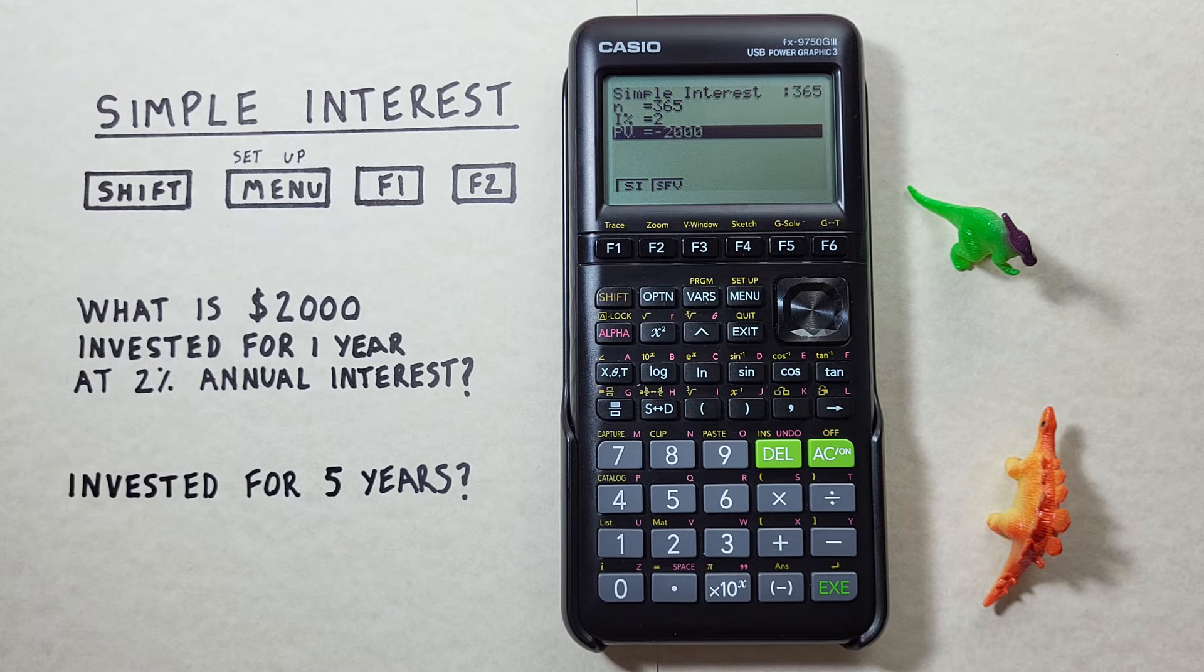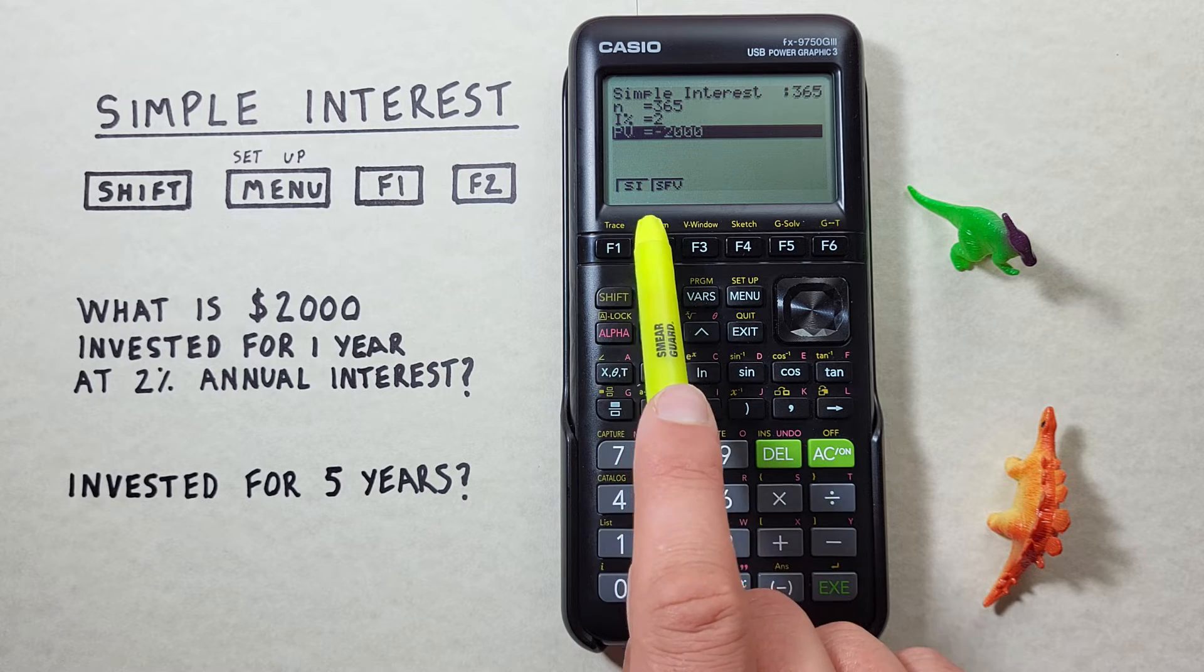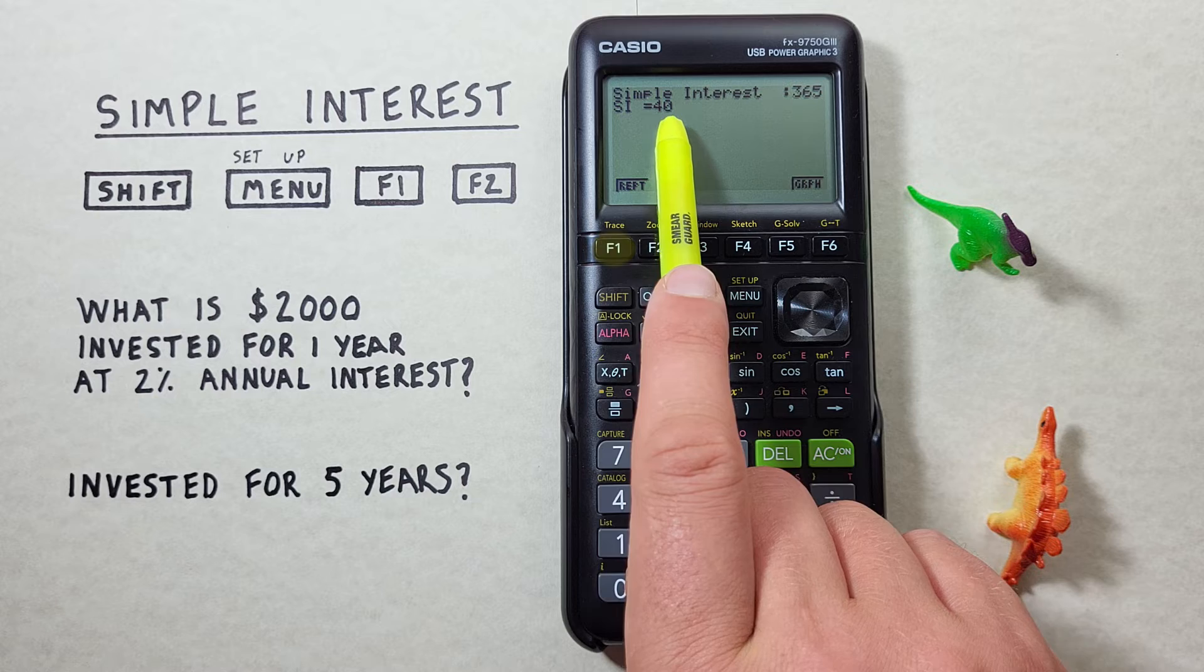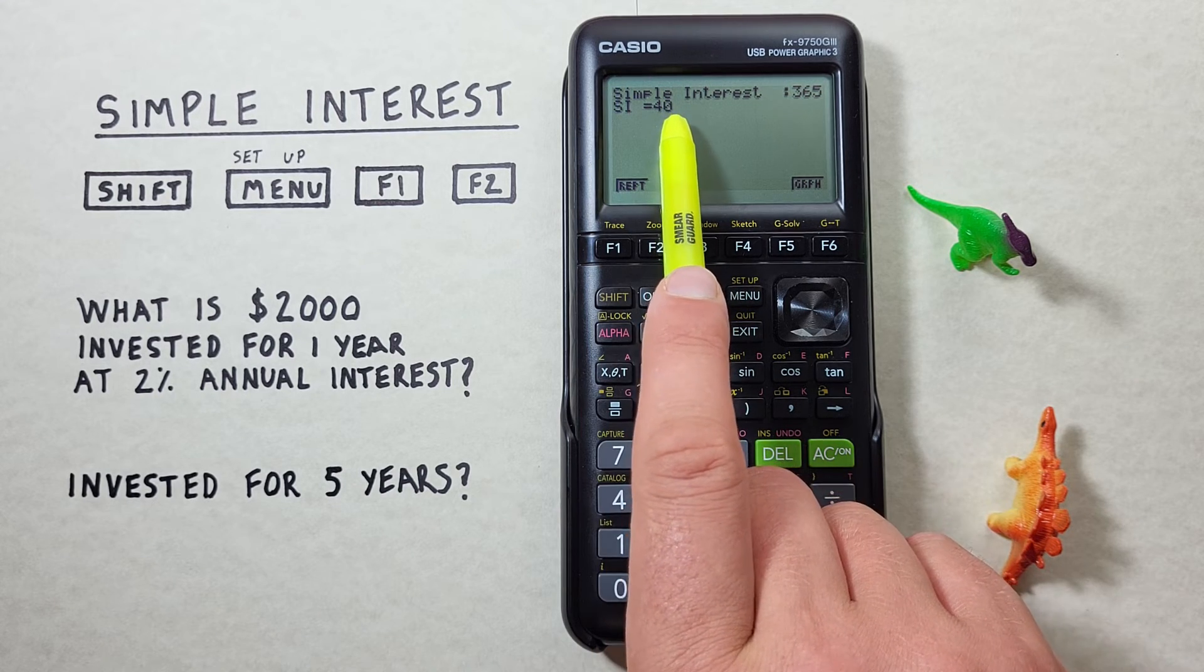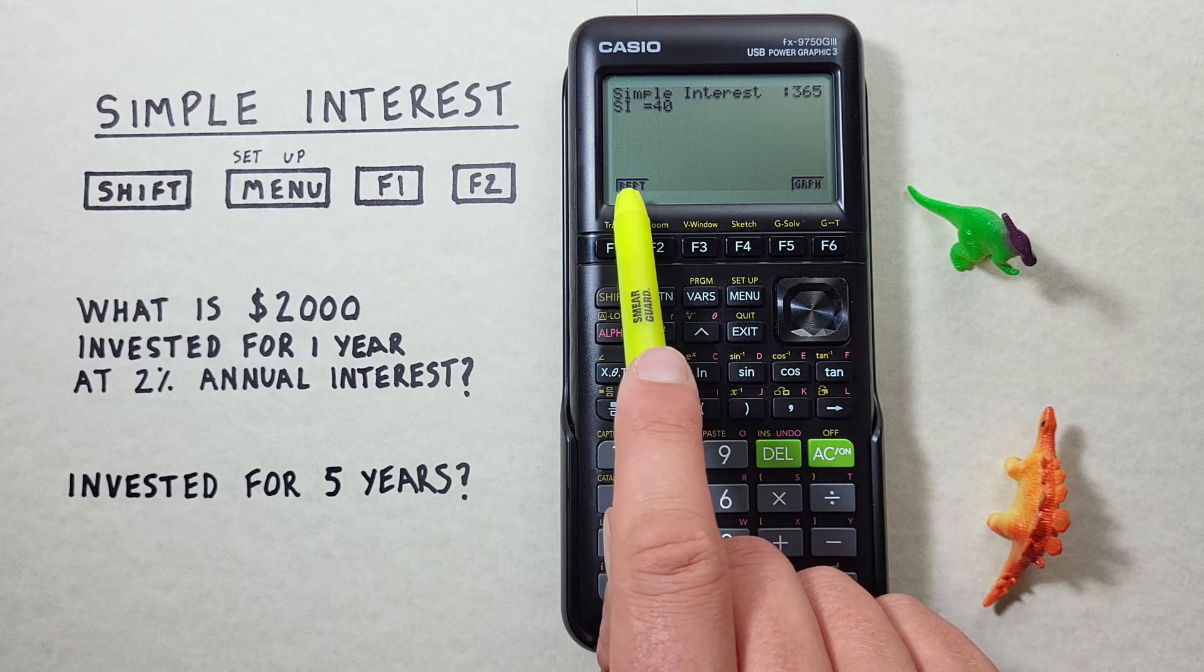Alright let's see what we get. We have SI or simple interest so we press F1. We see simple interest earned ends up being $40. To go back we hit the F1 key or REPT.